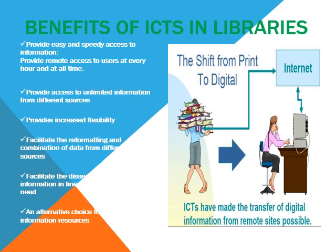ICTs provide access to unlimited information from different sources. Previously, a user would come to access one book at a time, but with ICTs you can access several information resources at the same time. One particular information resource can also provide a direct link to another information resource by virtue of the internet. It provides increased flexibility, facilitates reformatting and combination of data from different sources, facilitates easy dissemination of information in line with users' information needs, and provides alternative choices for researchers in terms of information.